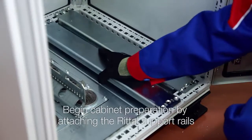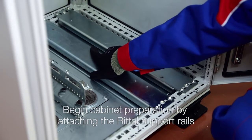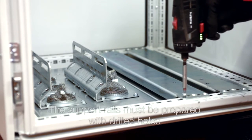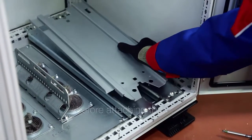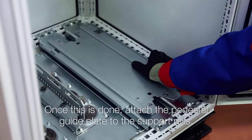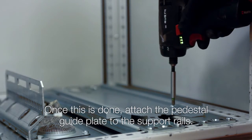Begin cabinet preparation by attaching the RITL support rails to the base of the cabinet. The support rails must be prepared with drilled holes before attaching them. Once this is done, attach the pedestal guide plate to the support rails.